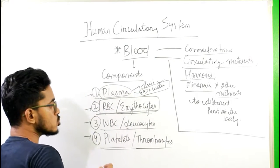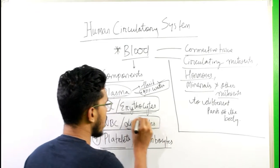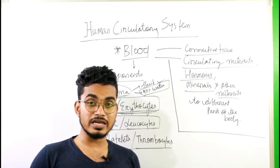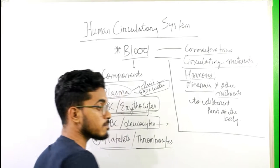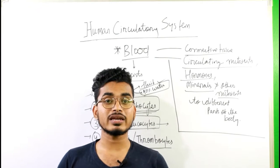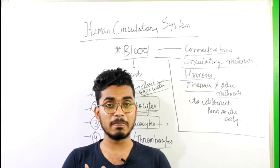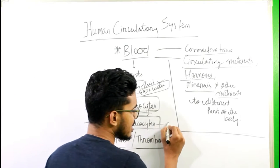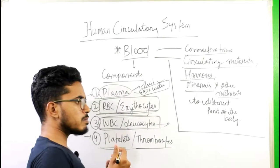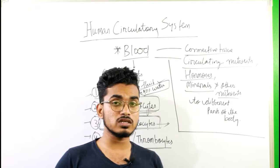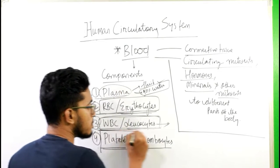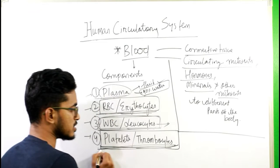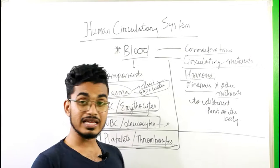Coming to WBC, or leukocytes — the main role of WBC is to protect us from various disease-causing organisms, or better said, disease-causing pathogens. WBC fights against any sort of pathogens in our body. Coming to the platelets, or thrombocytes — the main role of platelets is to clot the blood in case we have a wound.